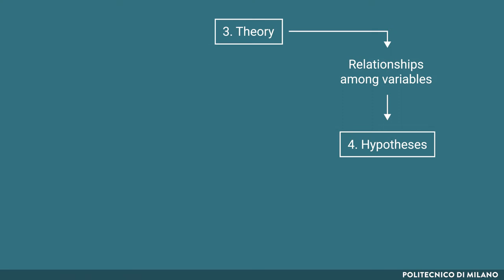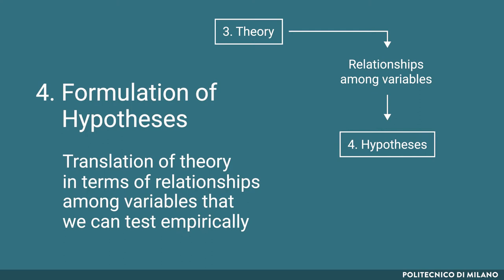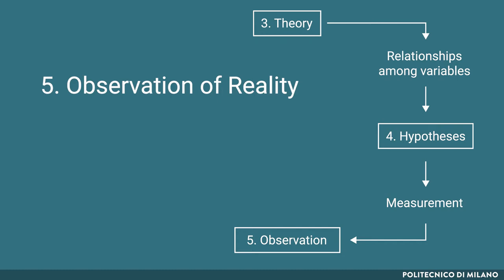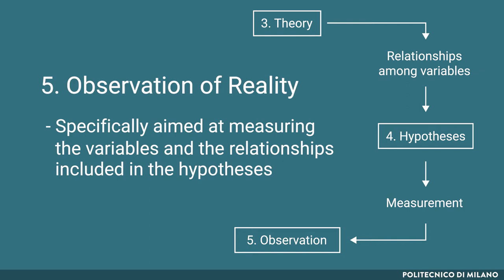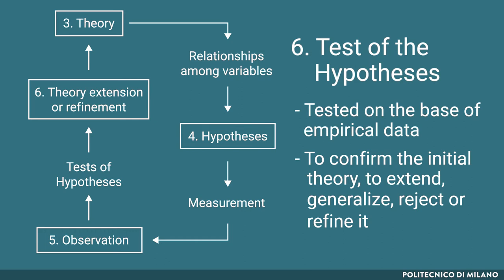The research cycle continues with the fourth step, that is the formulation of hypotheses — the translation of theory in terms of relationships among variables that we can test empirically. The fifth step is again the observation of reality, but this time specifically aimed at measuring the variables and the relationships included in the hypothesis. The sixth and last step is the test of the hypothesis on the basis of the empirical data, in order to confirm the initial theory, to extend or generalize it, or rather reject and refine the original theory.